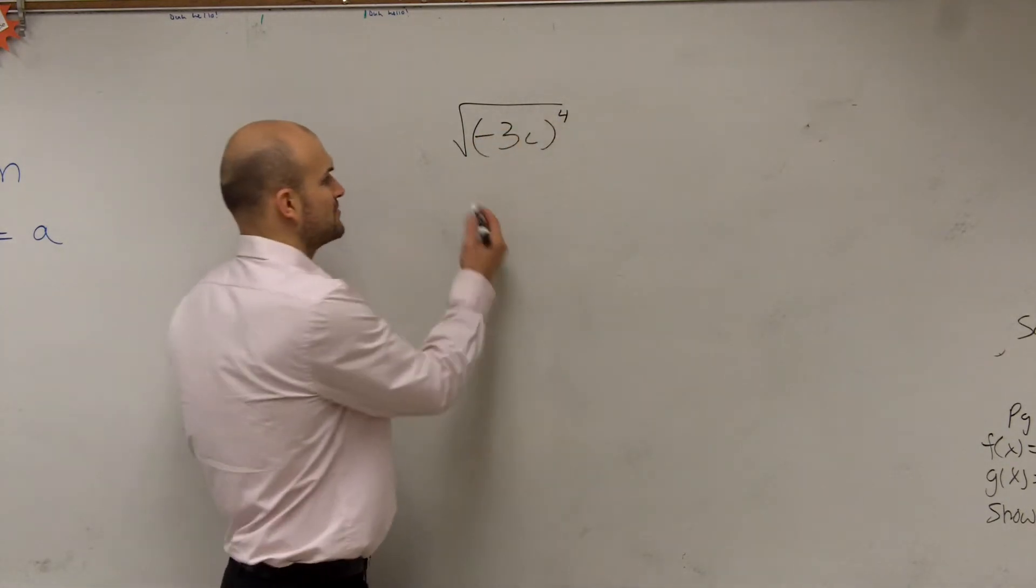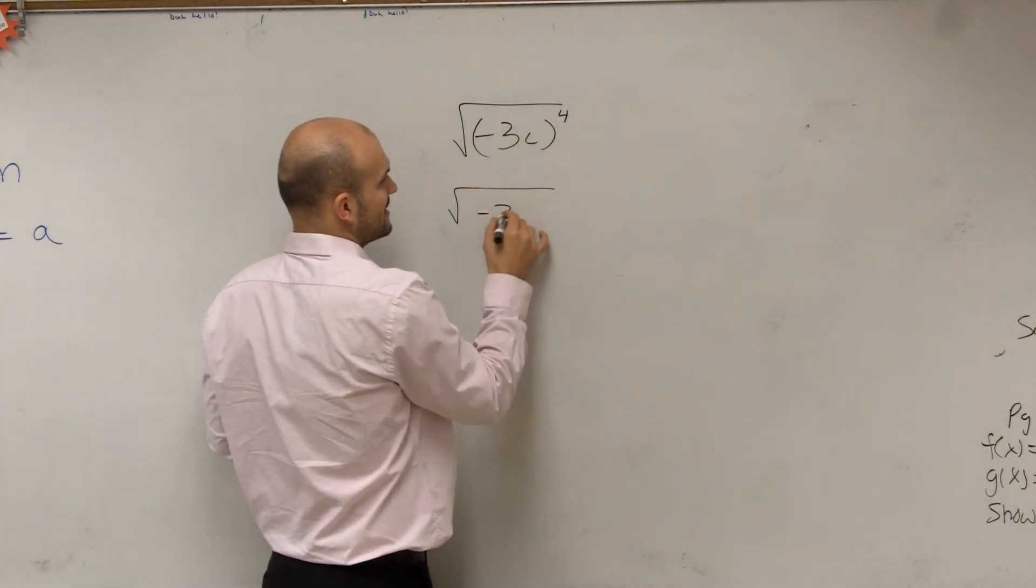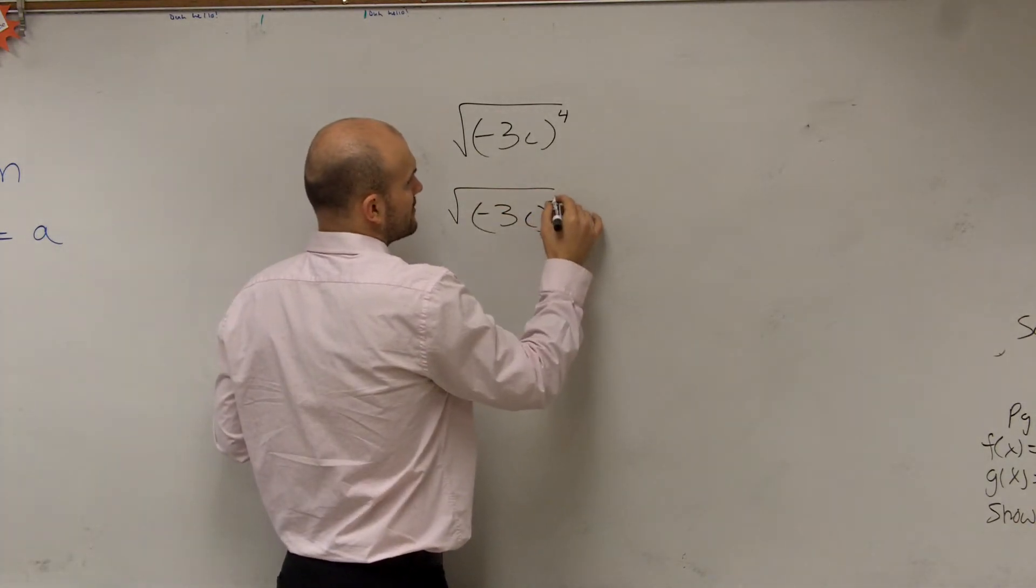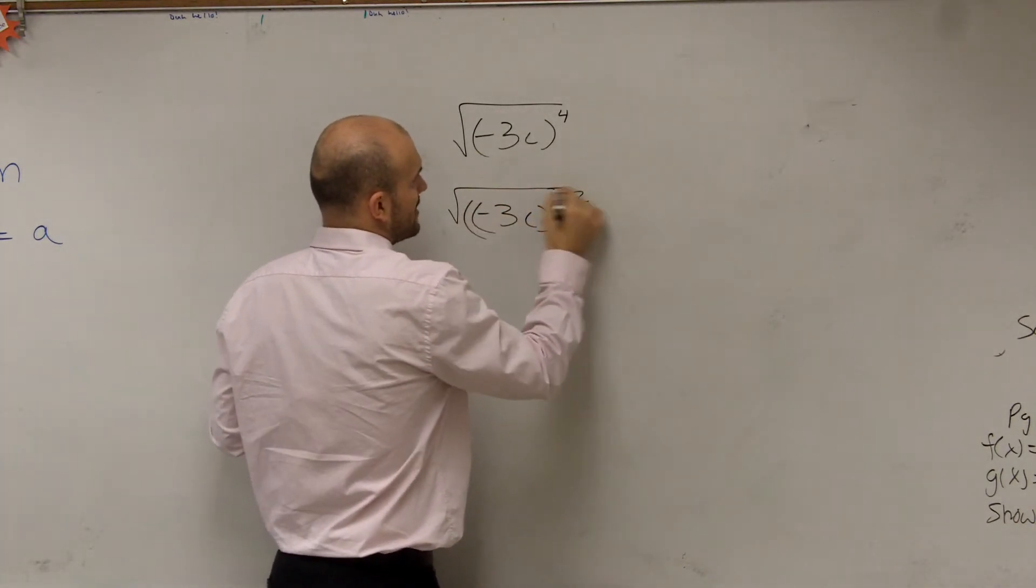You can take the square root of this because we can say this is the same thing as negative 3c squared squared, right?